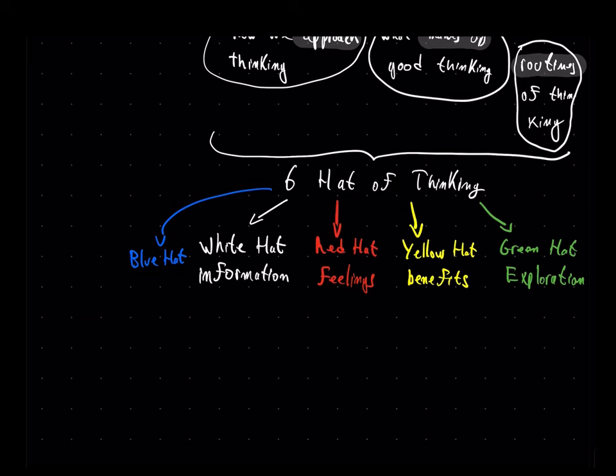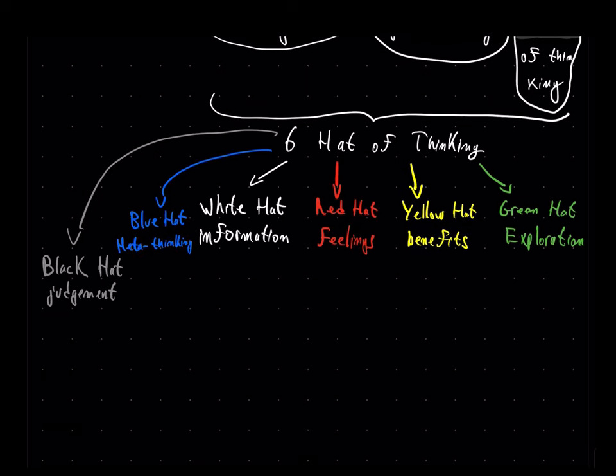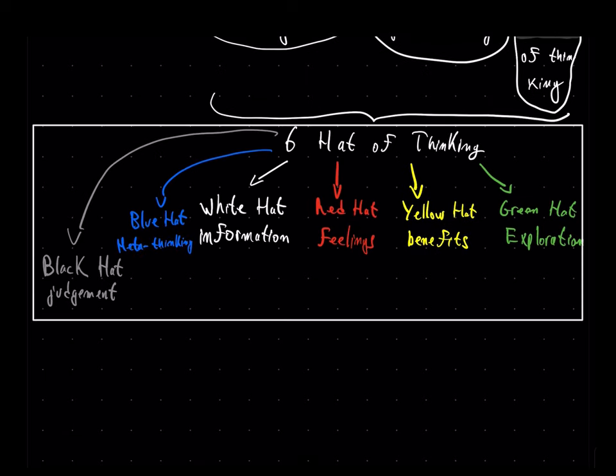Blue hat thinking is about thinking about thinking. So, it's about considering the approach we're taking regarding a given situation. And finally, there's black hat thinking, which is about judgment and comparison.